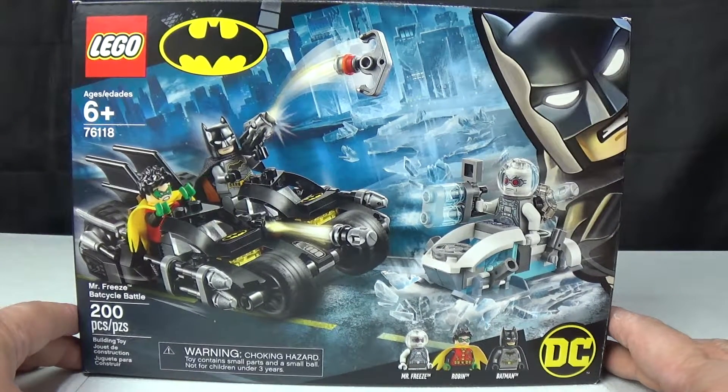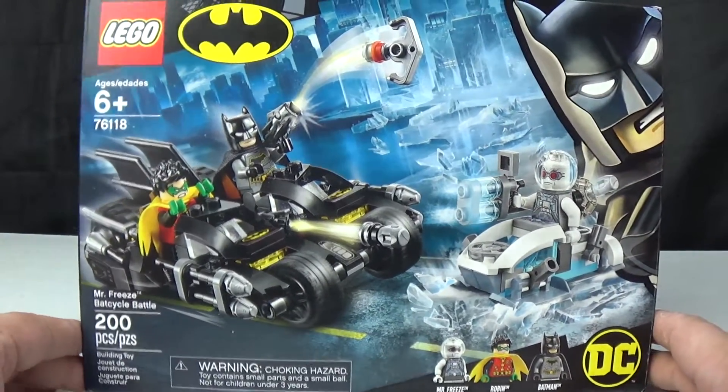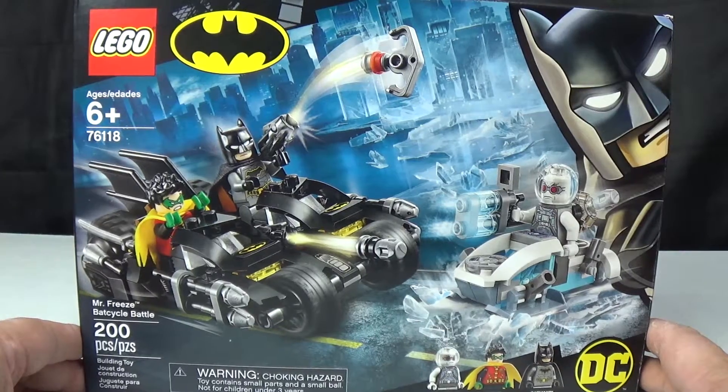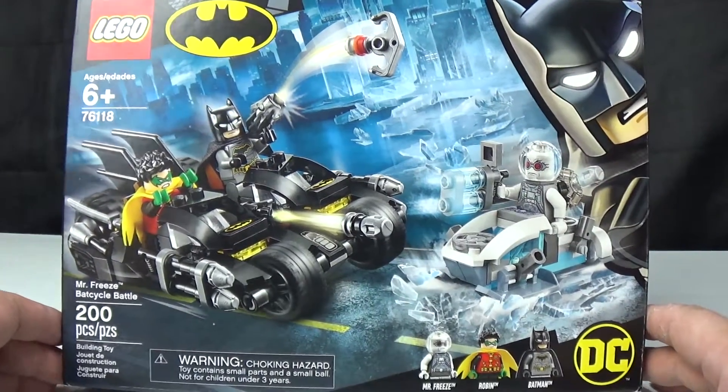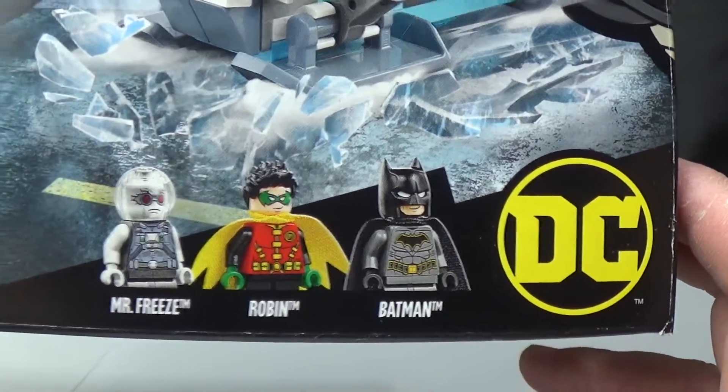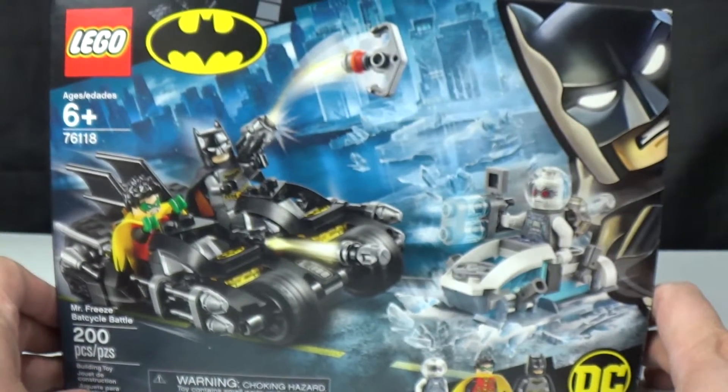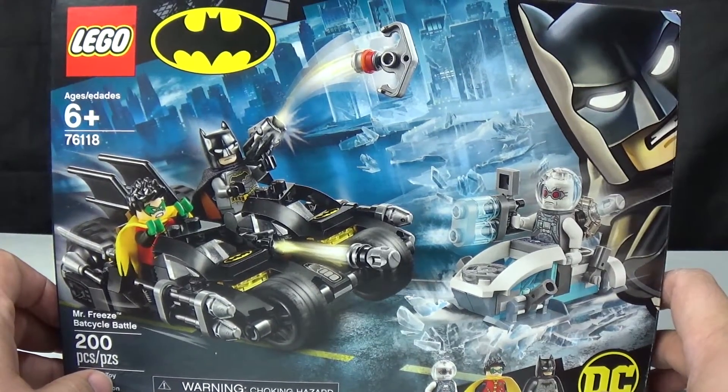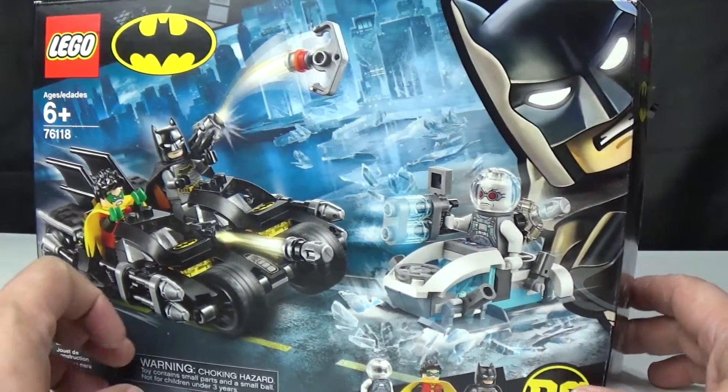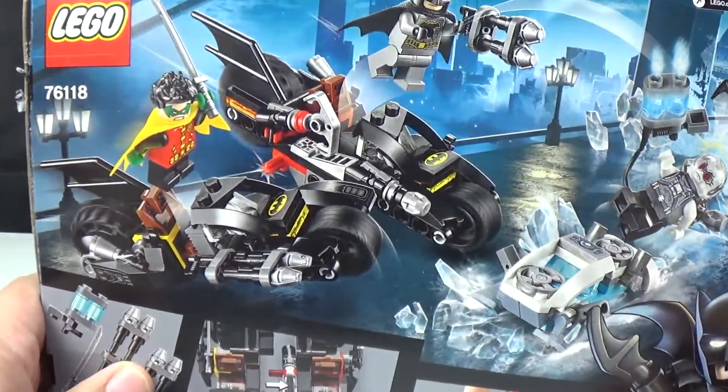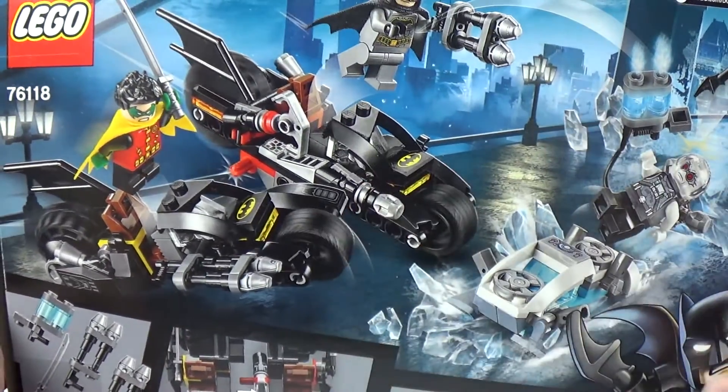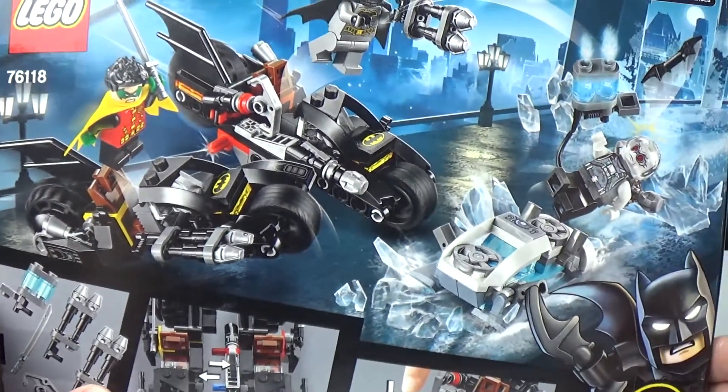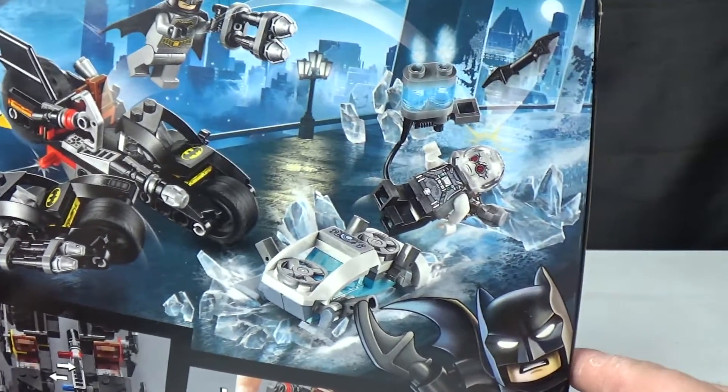This is the LEGO Mr. Freeze Bat Cycle Battle. With this you get three figures and 2.5 vehicles. I'll explain that in a minute as soon as I turn the box around. You get two bat cycles which merge into one bat vehicle.